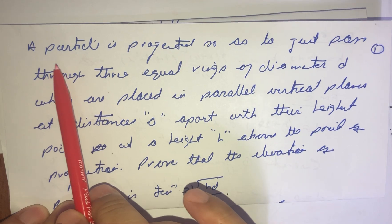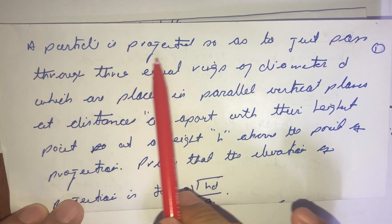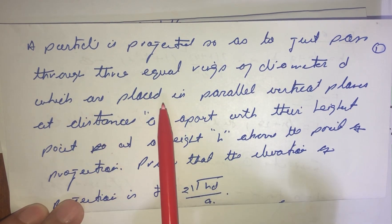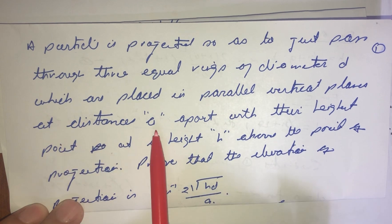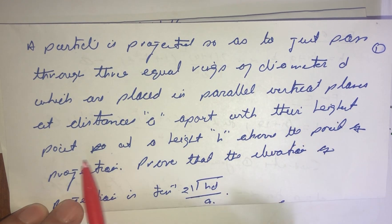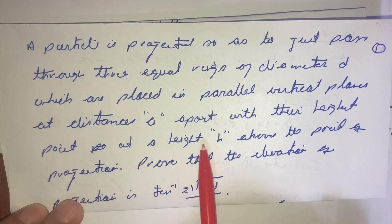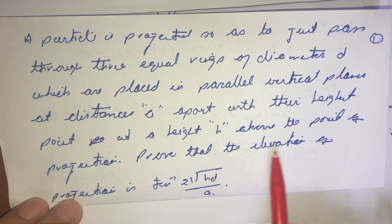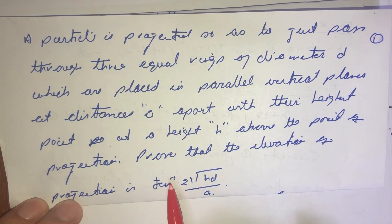This is a very interesting question. A particle is projected so as to just pass through three equal rings of diameter d, which are placed in parallel vertical planes at distance a apart, with their highest point at a height h above the point of projection. We need to prove that the angle of elevation of projection is given as tangent inverse of the square root of h multiplied by d divided by a. This question is entirely based on the equation of trajectory.